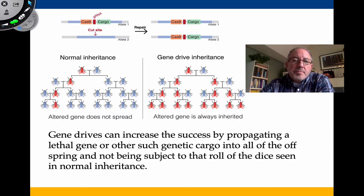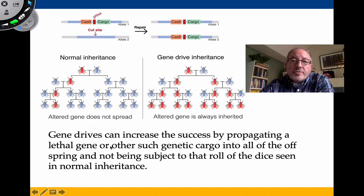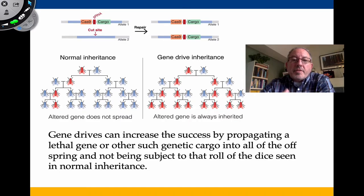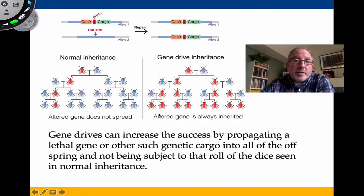Normal inheritance of a particular sequence in a diploid organism doesn't spread very easily. Gene drives can increase the success of propagating a lethal gene, knocking something out, or delivering a particular genetic cargo that will take the species down in a variety of ways. If it's in both alleles, it will eventually show up in the progeny through mating — the altered gene is always inherited in a gene-drive situation.